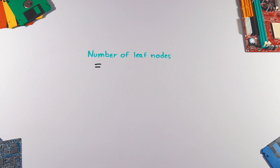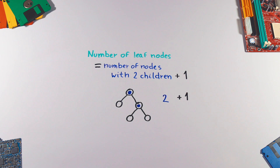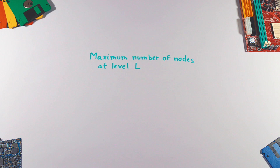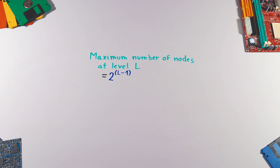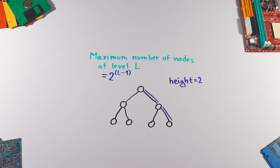Binary trees have the following properties: the number of leaf nodes is always one more than nodes with two children. The maximum number of nodes at level L of a binary tree is 2 to the power L minus 1.